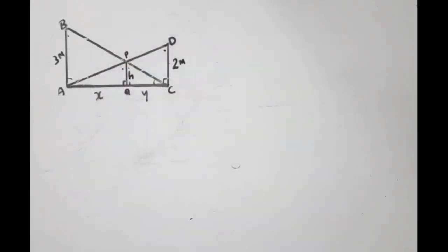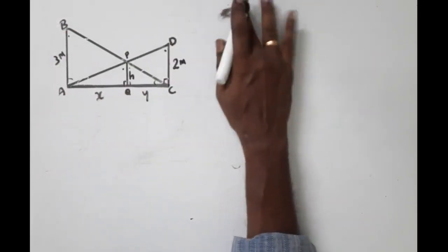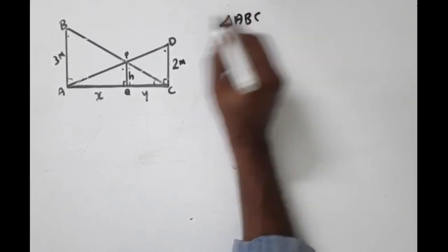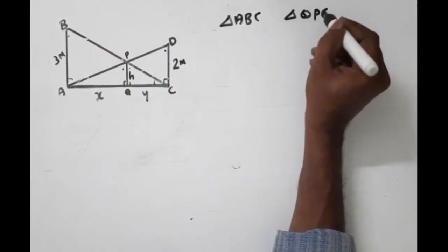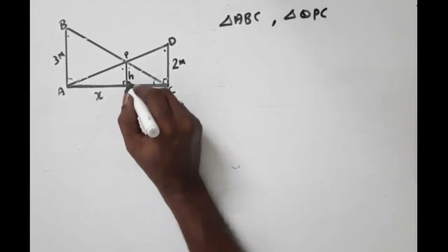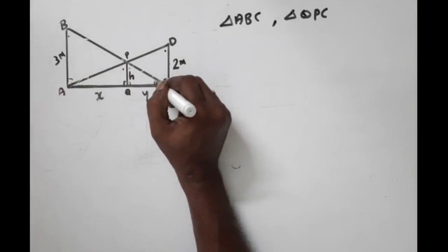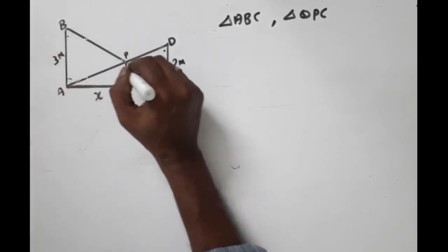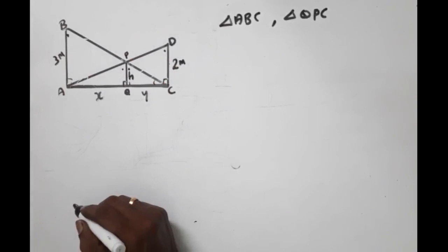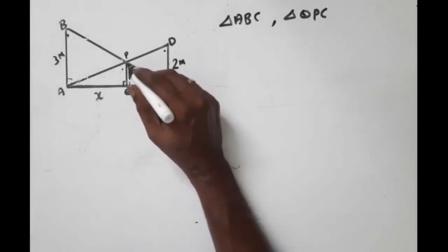We can identify that this angle is the same angle. A, B, C is a right angle triangle. Triangle ABC and triangle QPC — these two triangles are similar, because these two angles are perpendicular, that is 90 degrees, and this angle is common.